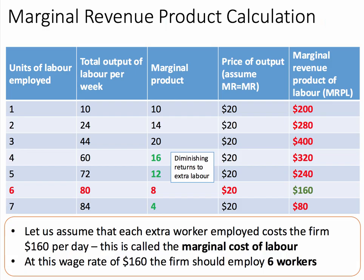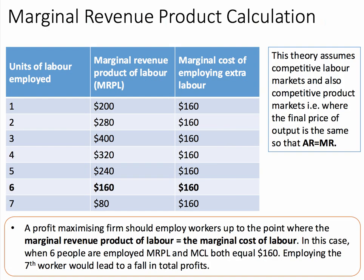At this wage rate of $160, the firm optimises by employing six workers. When six units of labour are employed, the marginal product is 8, giving a marginal revenue product of $160, which equals the marginal cost of employing labour. Were the firm to employ the seventh worker, it would cost another $160, but they'd only get $80 of extra revenue from that worker's output. So a profit maximising firm should employ workers up to the point where MRPL equals the marginal cost of labour — that's at the sixth worker.